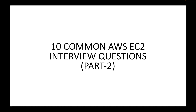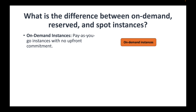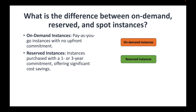The first question you can expect is: what is the difference between on-demand instances, reserved instances, and spot instances? These are the different pricing models available for EC2 instances. On-demand instances follow a pay-as-you-go model — you only pay for what you use, with no upfront commitment or contract period. You pay either by the second or by the hour depending on the instance type.